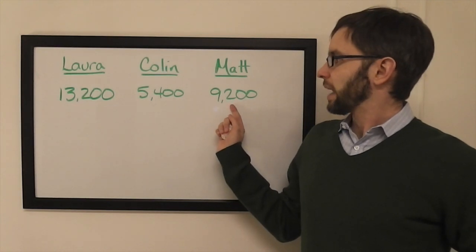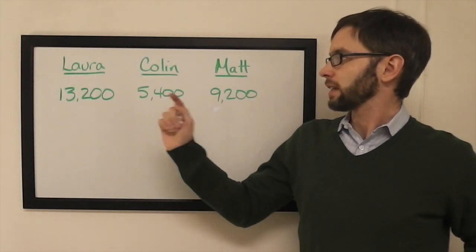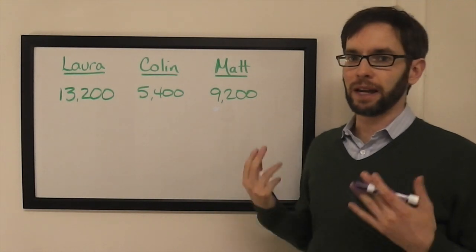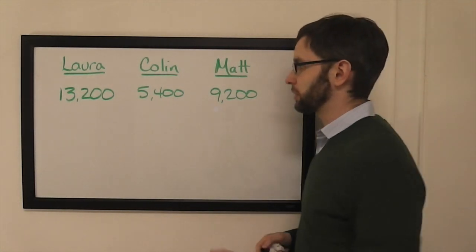You'll see that Matt trails Laura by $4,000 and Colin trails Matt by $3,800. So Matt is in Stratton's Dilemma, and we'll see.